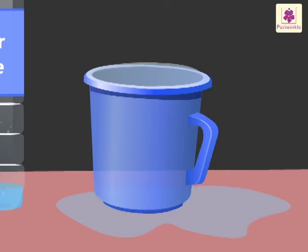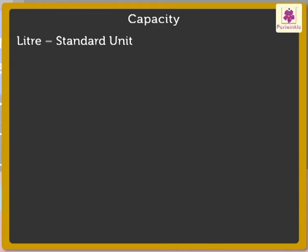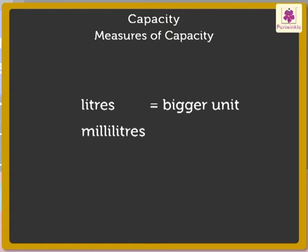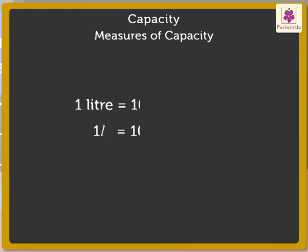Liter is the standard unit for measuring capacity. We measure the capacity of a container in liters and milliliters. A liter is represented like this. A milliliter is represented like this. Liter is the bigger unit and milliliter is the smaller unit of capacity. We know that one liter is equal to one thousand milliliters.